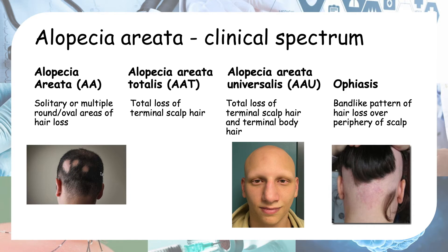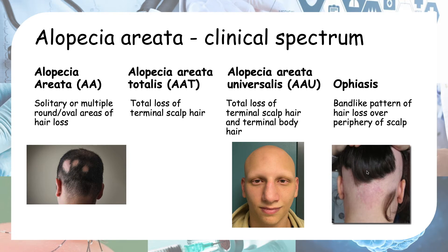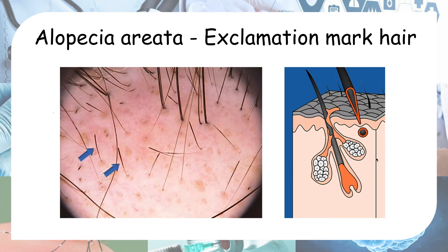If hair loss affects the whole scalp it is known as alopecia areata totalis. If it affects the whole scalp and other terminal body hair such as eyebrows, eyelashes, and beard, it is known as alopecia areata universalis. If it affects hair in a band-like pattern around the scalp, it is known as ophiasis. In alopecia areata, you can see exclamation mark hair, where hair becomes narrow and tapers as it enters the scalp, seen especially at the periphery of the patch.